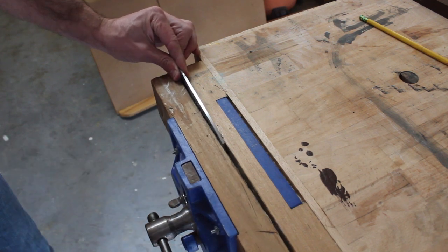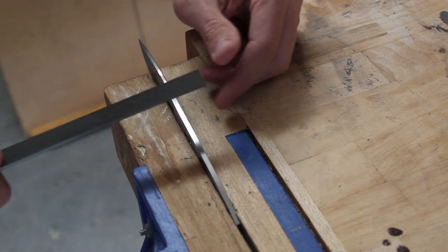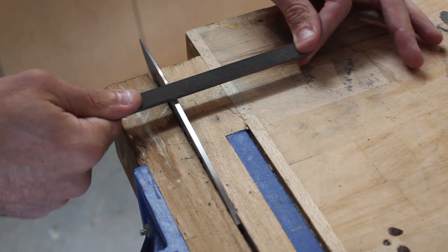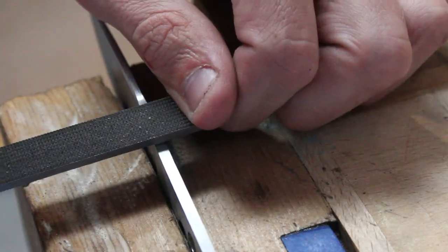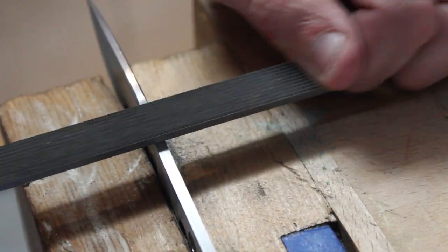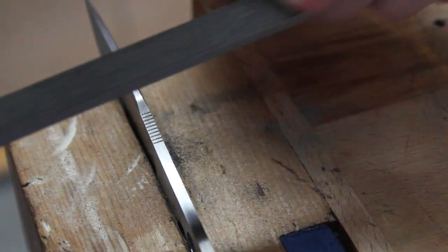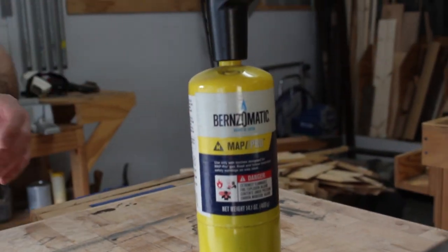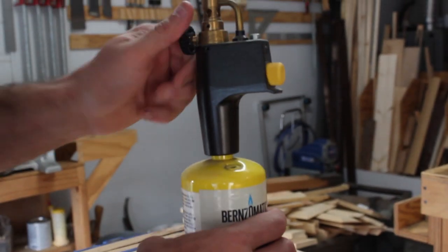Now I'm going to add some jimping to the spine using a checkering file. Once I'm done with the jimping I'll sand the knife to 320 grit and then I'll go ahead and do the heat treatment.